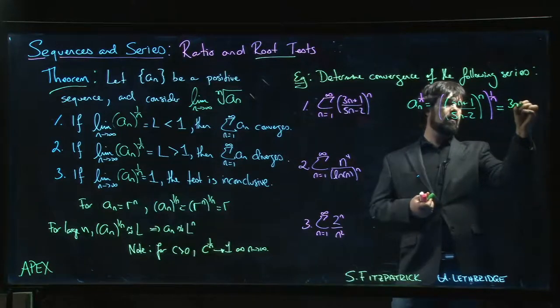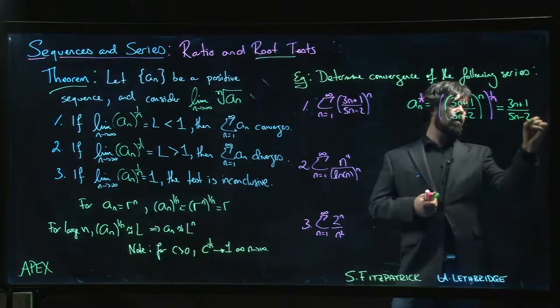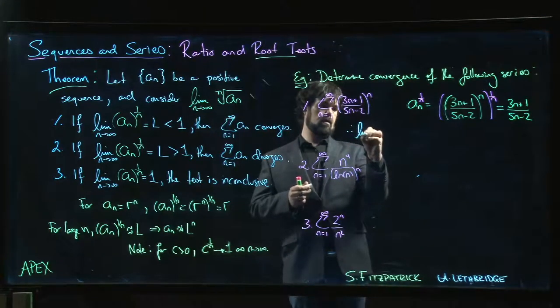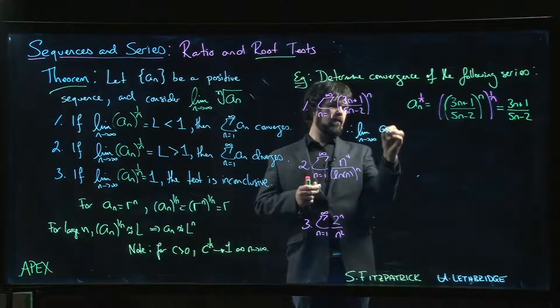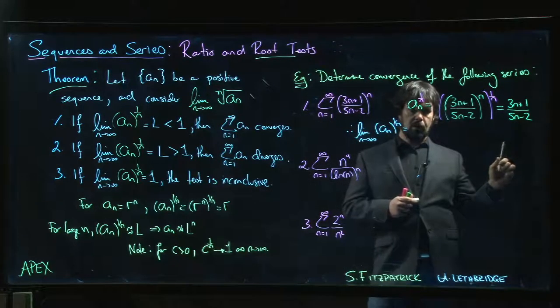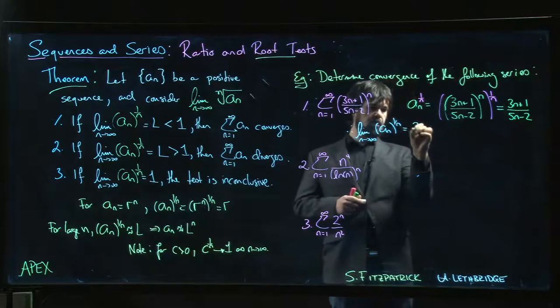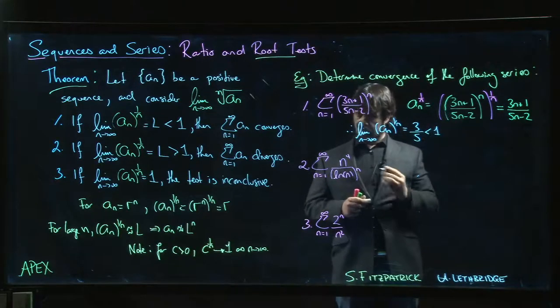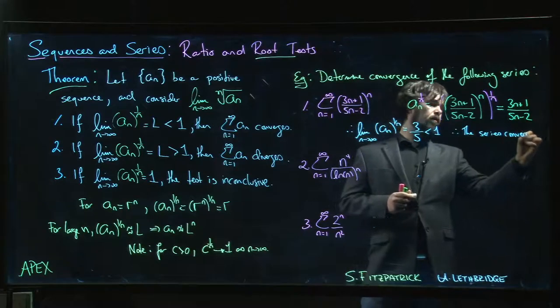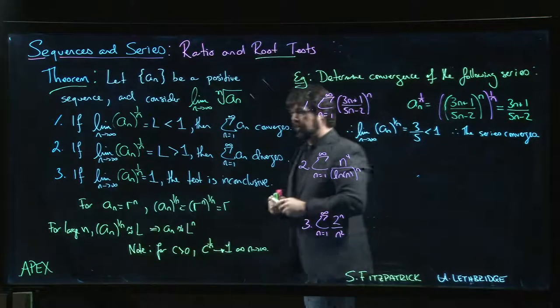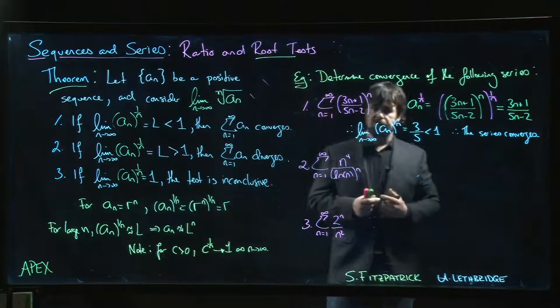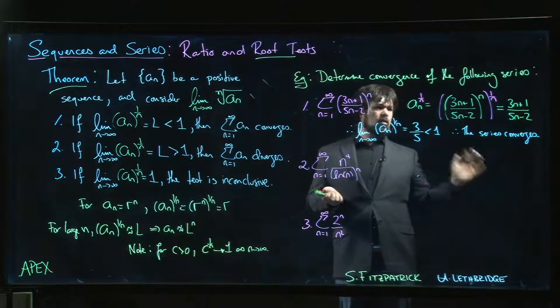We just get (3n+1)/(5n-2). Well that means that the limit as n goes to infinity of a_n to the 1 over n, well this is rational, same power top and bottom, we look at the coefficients. Limit is 3/5. 3/5 is less than 1 and that means the series converges. Okay that works out for us. Now you could probably also do this using the ratio test. I think you would find that ratio test will also work for you, root test just happens to be cleaner in this particular case.